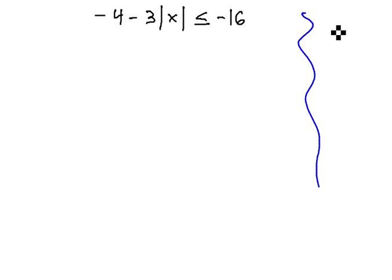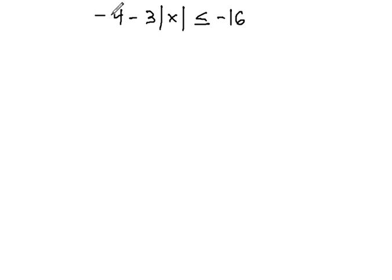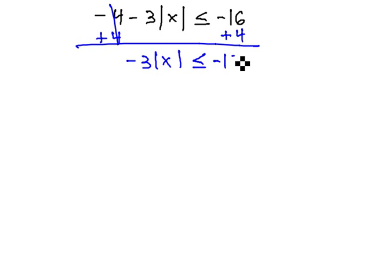Very similar to how we would solve negative 4 minus 3x is less than or equal to negative 16 by adding 4 to get negative 3x is less than or equal to negative 12, we will follow much the same pattern on this problem. In other words, we get rid of the negative 4 by adding 4 to both sides. The negative 4 and positive 4 come out to 0, and we get negative 3 absolute value of x is less than or equal to negative 12.